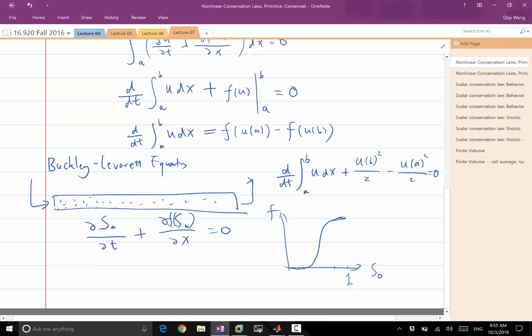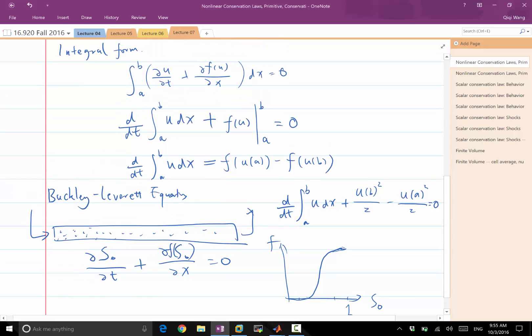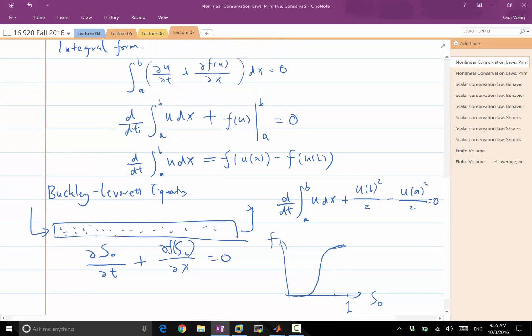More often, we have a system of conservation laws in which my U is a vector, is momentum and density, for example, or momentum, density, and energy. And the flux of mass would depend on the momentum. The flux of momentum would depend on the density. The flux of energy would depend on also momentum and energy. So, you have a system of conservation laws, but then, always, the flux, be a vector or a scalar, is completely determined by the state at that local point. The state can be, again, a scalar or a vector.